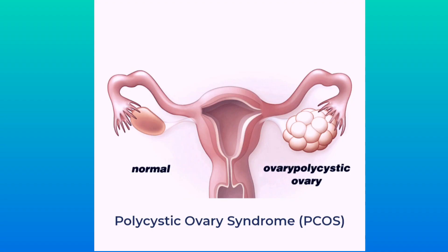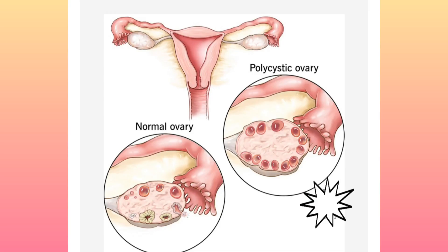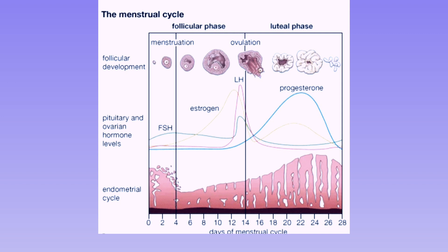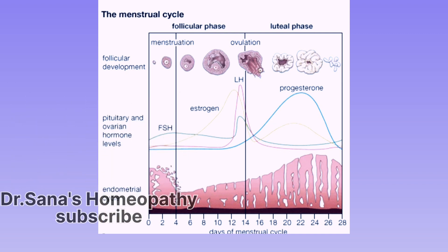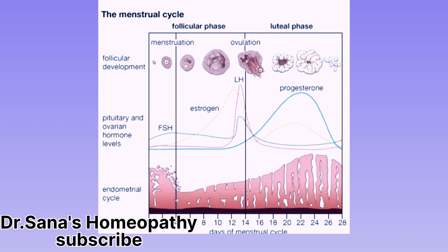Now let's understand the physiological process of the menstrual cycle, where the brain plays an important role. The hypothalamus secretes GnRH — gonadotropin releasing hormone — into the pituitary gland. From the pituitary gland, GnRH travels via blood and reaches the uterus, helping in maturing eggs present during the ovulation period.